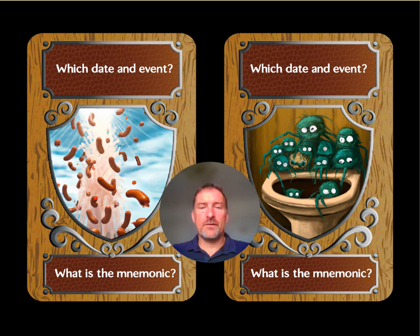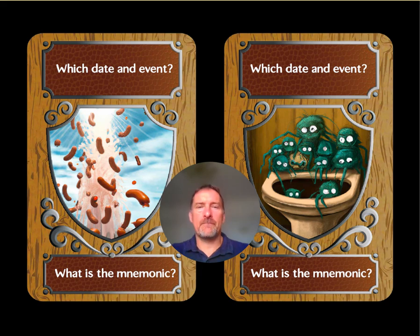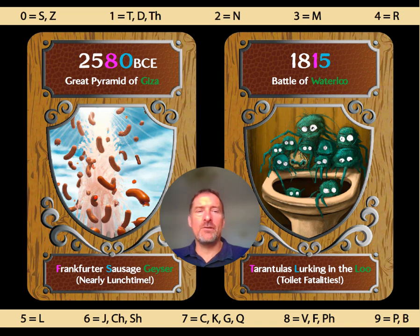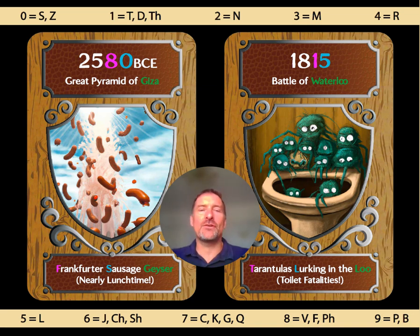Here are two images you've seen before — a bit of spaced retrieval practice. Can you remember the mnemonic phrases for the sausages and the tarantulas? 'Frankfurter Sausage Giza' — F equals 8, S equals 0, century 'nearly lunchtime' gives 2 and 5 — and 'tarantulas lurking in the loo' — T gives 1, L gives 5, century 'toilet fatalities' gives 1 and 8. Pause the video if you need a bit longer.